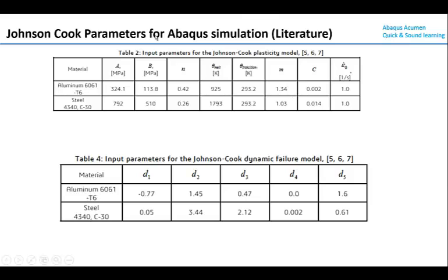These are parameters developed through experiment for aluminum and steel grades — A, B, n, and all other parameters — tabulated and available in literature. For your own material, you need to conduct experiments and derive these parameters yourself. The failure model information about D1 to D5 factors can all be defined into the Johnson-Cook material model through Abaqus CAE software to evaluate the application.